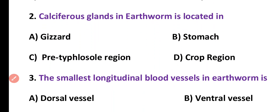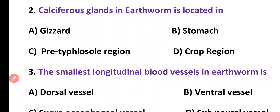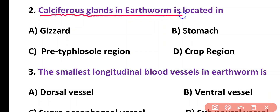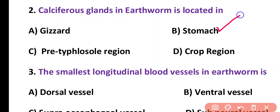Question number 2. Calciferous glands in earthworm is located in: gizzard, stomach, pre-typhlosole region, or crop region. Correct answer is option B. Calciferous glands of earthworms are located in the stomach region.